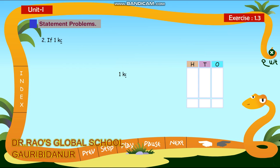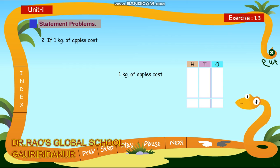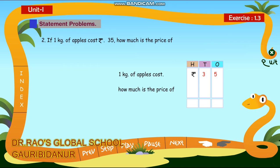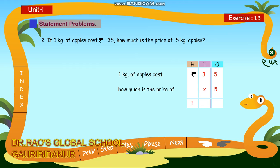2. If 1 kg of apples cost rupees 35, how much is the price of 5 kg of apples? Rupees 175.